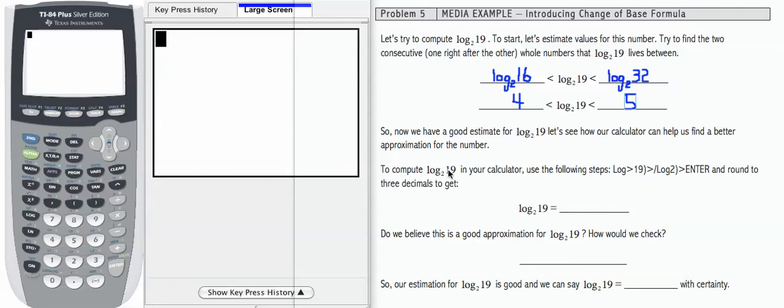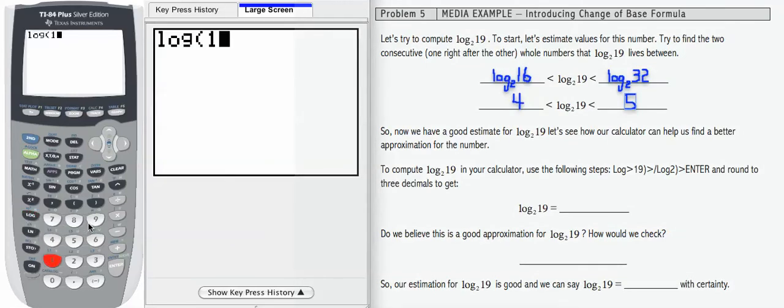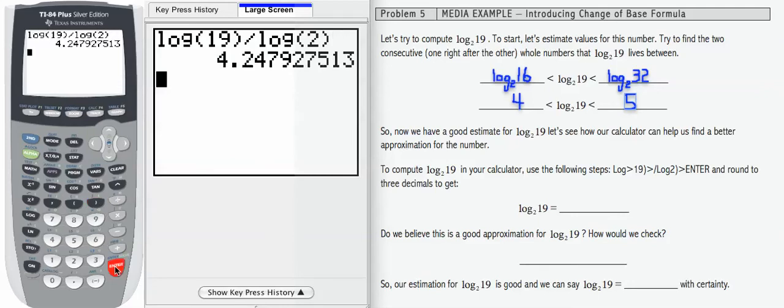To compute log base 2 of 19, let's use the steps that are listed here. On our calculator, what we're going to do is take log 19 in parentheses divided by log 2. Be sure you see what I did there and how I used the parentheses. I'm going to enter and get a result.